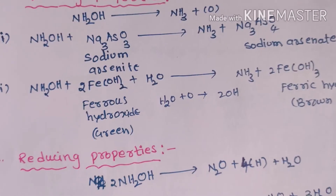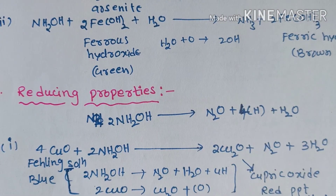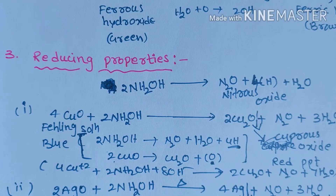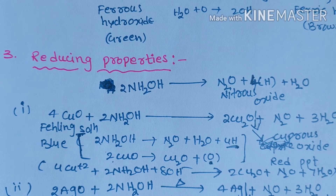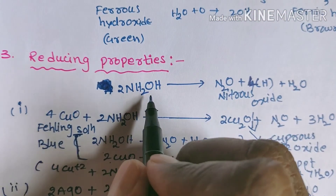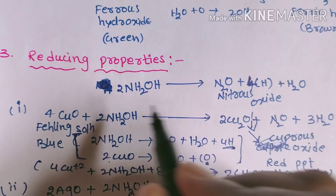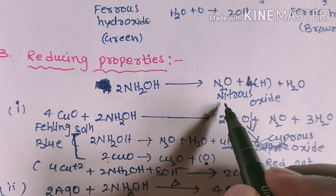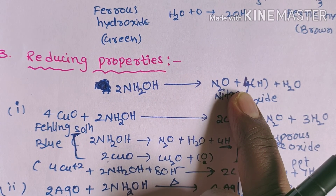Now we go for the reducing properties. Any substance that has hydrogen atoms in it behaves as a reducing agent, and since hydroxylamine contains hydrogen atoms it also behaves as a reducing agent. The base equation responsible for the reducing properties is: two molecules of hydroxylamine decompose together to give nitrous oxide (N₂O) along with four nascent hydrogen atoms. These nascent hydrogen atoms are responsible for the reducing properties of hydroxylamine.